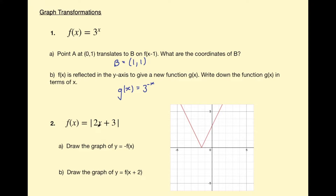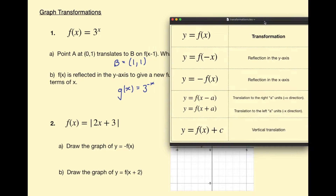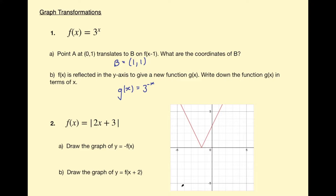Example 2 gives us f of x equals the absolute value of 2x plus 3. Even if you haven't seen an absolute value function before, the graph transformation rules still apply. Part A says draw the graph of y equals negative f of x. Looking at our rules, negative f of x is a reflection in the x-axis, so we need to reflect this graph in the x-axis.